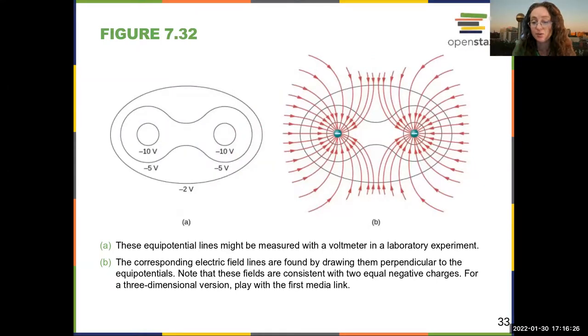Here you can see a couple more examples. This is two point negative charges. Here you can see the equipotential lines and the field lines. Where the equipotential lines are closer together, you have more field lines. You have a stronger field.